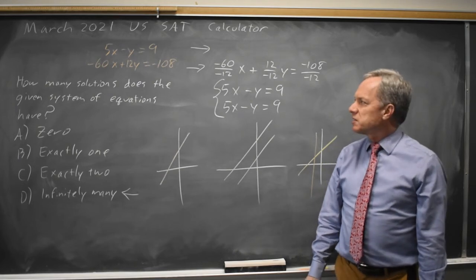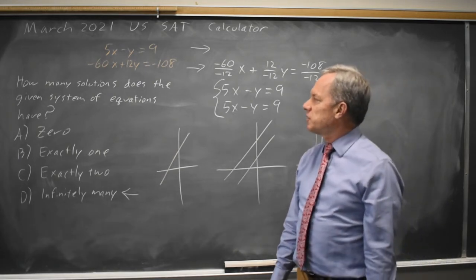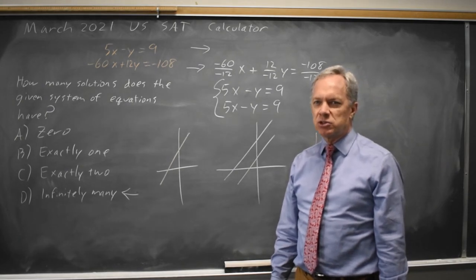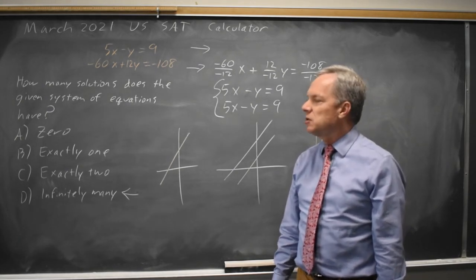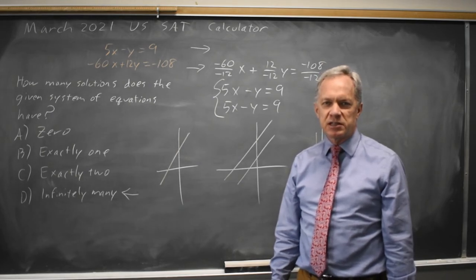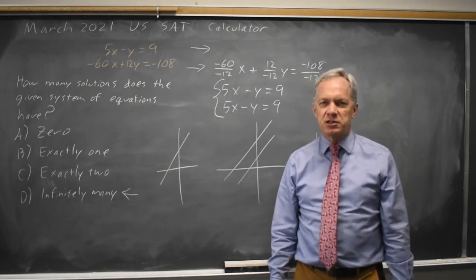They often ask this in a reverse direction, where they ask you to find the equation that has no solution. That will be the choice that has the same slope. Or the equation that has infinitely many solutions, and that's the solution that has the same slope and the same y-intercept.